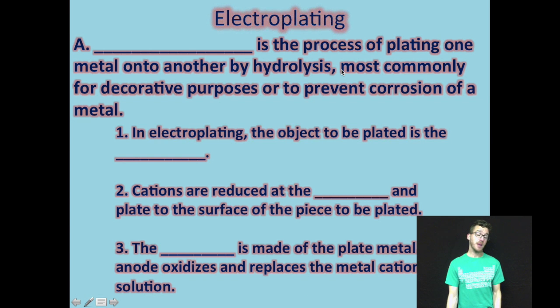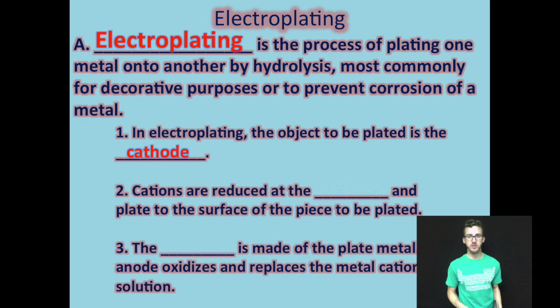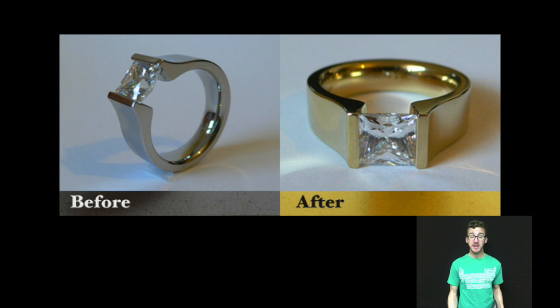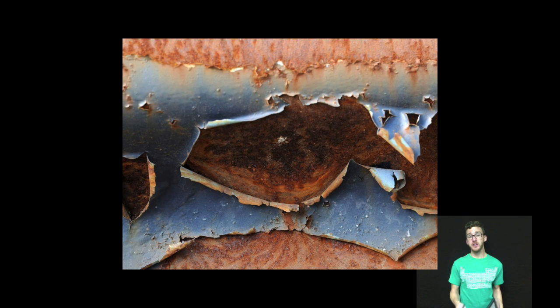The second important application of electrolysis that you want to be comfortable with is the idea of electroplating. In this process, we plate one metal onto another by electrolysis. Most commonly, we do this for decorative purposes. Many times, we plate a really expensive metal on top of a really cheap metal to save ourselves money or to prevent corrosion of a metal.